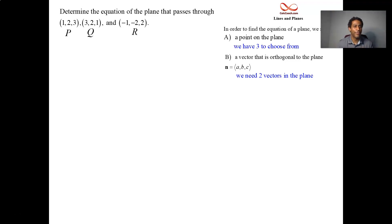Let's go P to Q. So we have the vector 1, 2, 3, the point 1, 2, 3 and the point 3, 2, 1. 3 minus 1 and 2 minus 2 and 1 minus 3. That gives us the vector 2, 0, negative 2. The vector from P to Q.